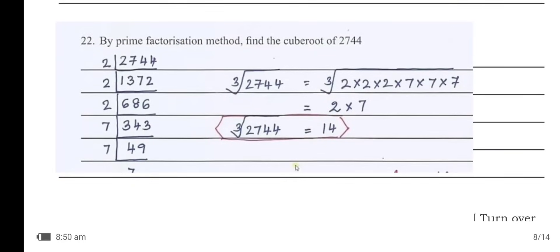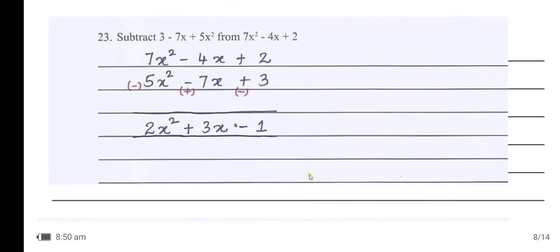By prime factorization method, find the cube root of 2744. Performing prime factorization: 2744 = 2 × 2 × 2 × 7 × 7 × 7. Therefore the cube root of 2744 = 14.